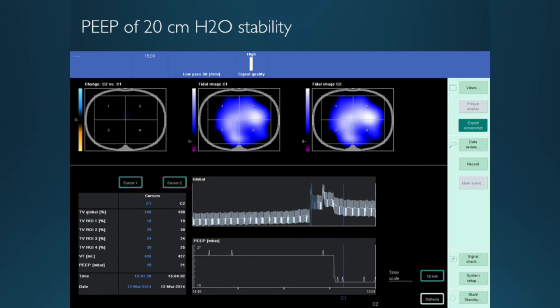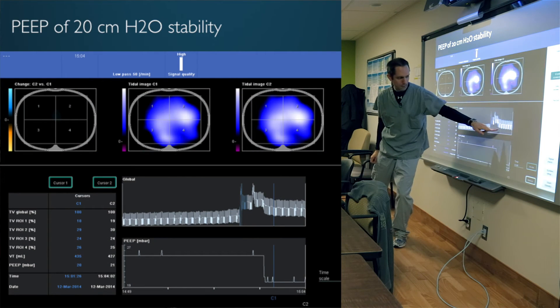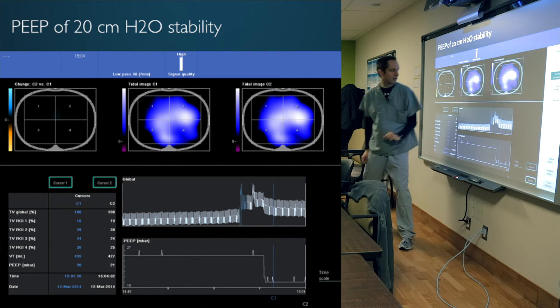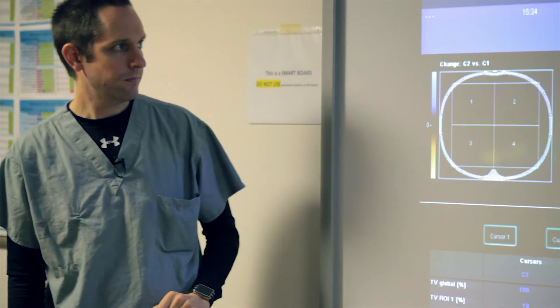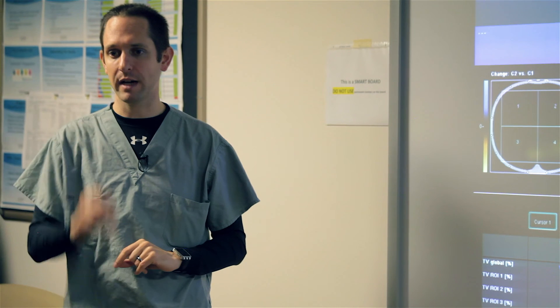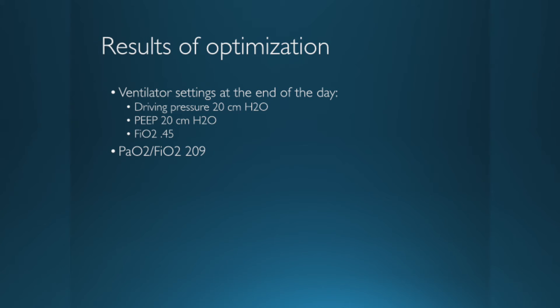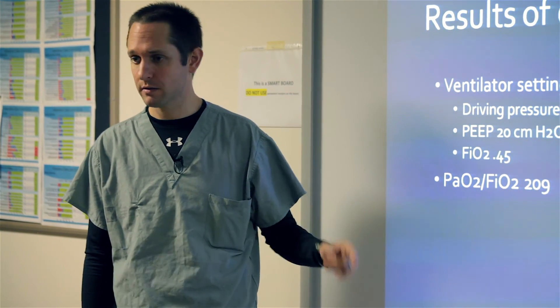We looked at 20 over time to see if it was stable. This is 20 over time. See how flat the bottom of that graph is? I've put the cursor here and then at the end, and you can see I've got no loss. So 20 was stable. We went to 18. You see the orange? We lost ventilation to the dorsal region, so we re-recruited her and put it back to 20. By the end of the day, she was still on a high driving pressure. We had her PIP at 20, and we were weaning her FiO2 to 45, and her PF ratio was 100 higher by the end of the day.